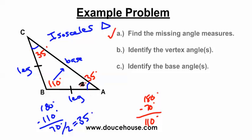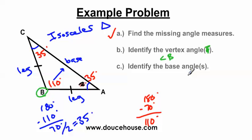There's only one vertex angle on an isosceles triangle. The vertex angle is the angle opposite the base — opposite the side that's not congruent to anything else. So in this triangle, that's angle B. And the base angles — there are two of them, always congruent to each other — are angle A and angle C.